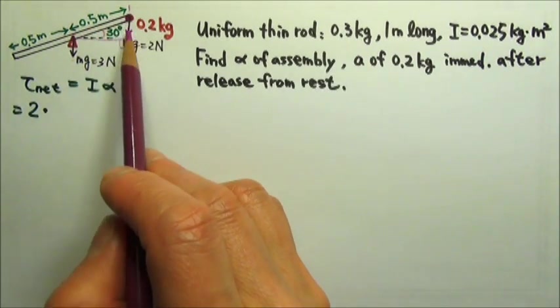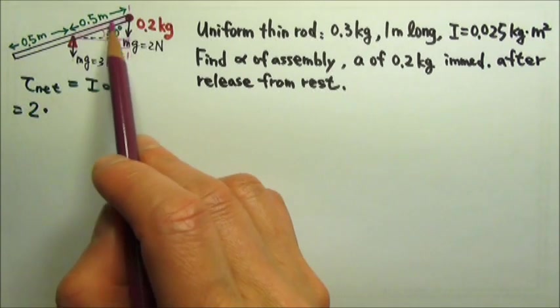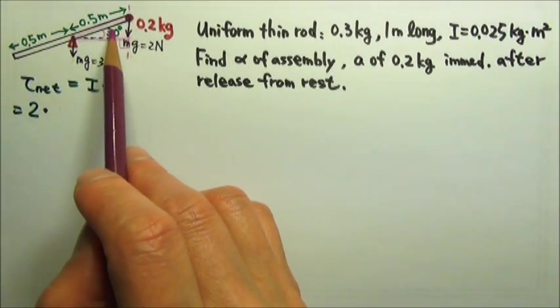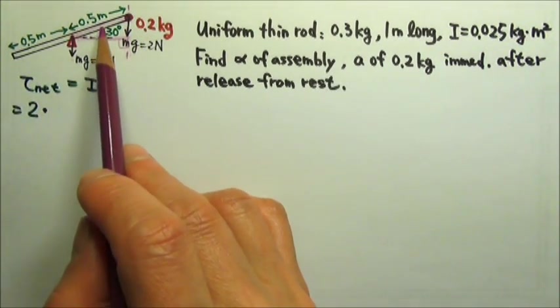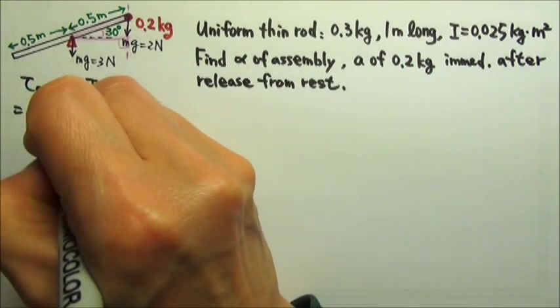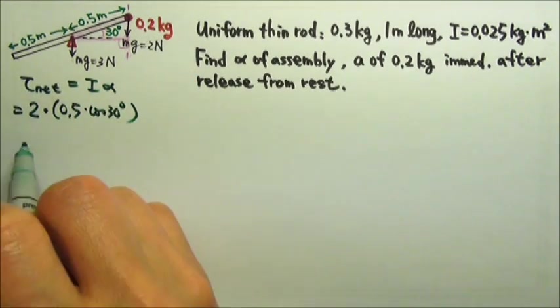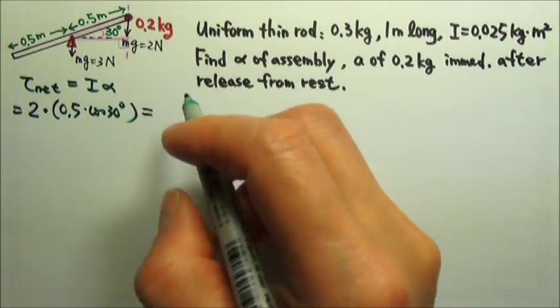This distance is adjacent to the 30-degree angle, and for this right triangle, the 0.5 meters is the hypotenuse. So if we want the lever arm, which is adjacent to the angle, we would multiply the hypotenuse 0.5 by cosine 30 degrees. That's the force times the lever arm, and this should equal I·α.